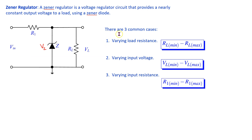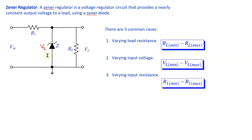For the Zener regulator there are three common cases to discuss. Case 1: when the load resistance is varying. Case 2: when the input voltage is varying. Case 3: when the input resistance is varying. For all these three cases the Zener diode is able to provide a nearly constant output voltage VZ across the load. So let's discuss these three cases.